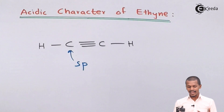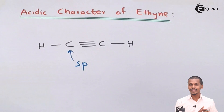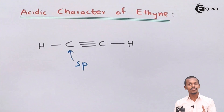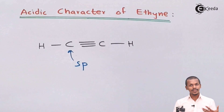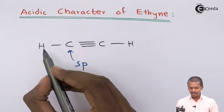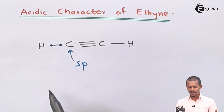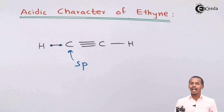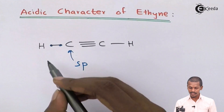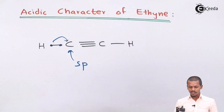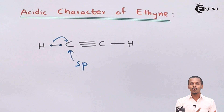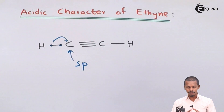Ethyne basically shows SP hybridization, and that's the reason that 50% of the character is S character and 50% is of the P orbitals. Because it exhibits 50% S character, the electrons being shared between one hydrogen and the carbon are now pulled more towards the carbon atom, which is more electronegative.